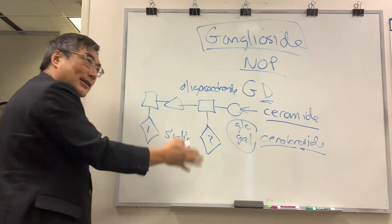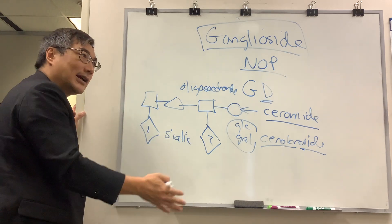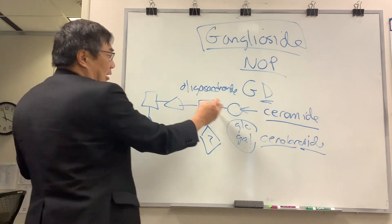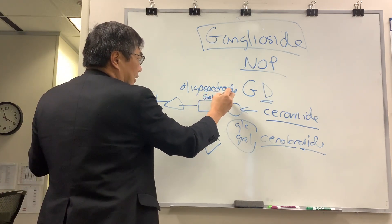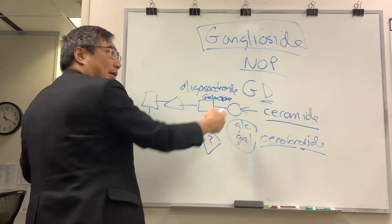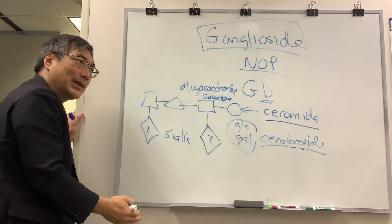If it was three, it'd be trisialic. If it was four, it'd be quadrosialic. In this case, there's two. Those are going to appear on the galactose. You can't just stick it on anywhere, it has to be stuck on in a very specific place.